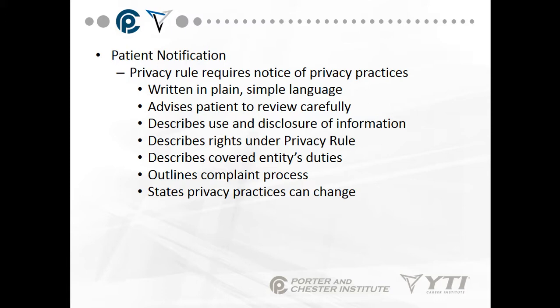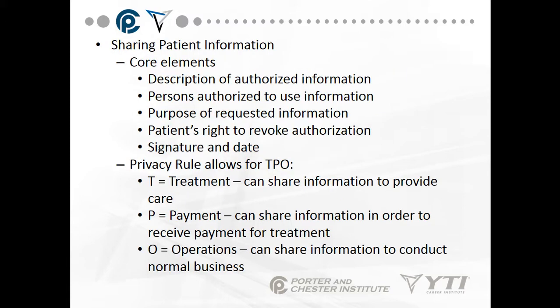Patient notification: The privacy rule requires a notice of privacy practices, written in plain, simple language. It advises the patient to review carefully, describes use and disclosure of information, describes rights under the privacy rule, describes covered entities' duties, and outlines the complaint process. States' privacy practices can change. Sharing patient information core elements include the description of authorized information, persons authorized to use information, the purpose of the requested information, the patient's right to revoke authorization, and a signature and date. The privacy rule allows for TPO: Treatment can share information to provide care; Payment can share information to receive payment for treatment; and Operations can share information to conduct normal business.